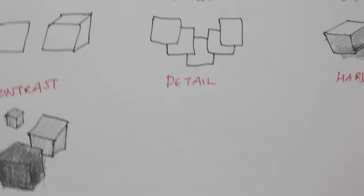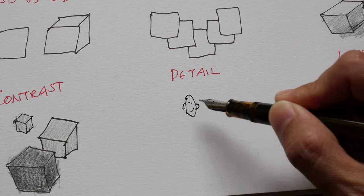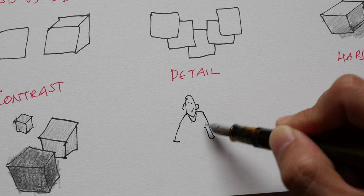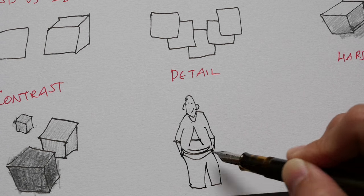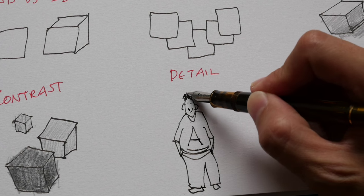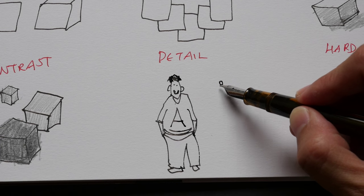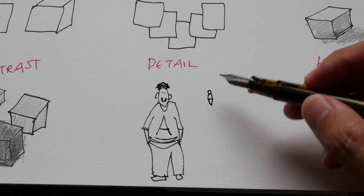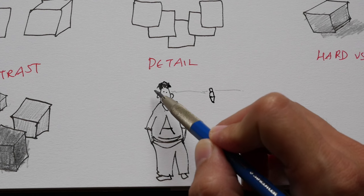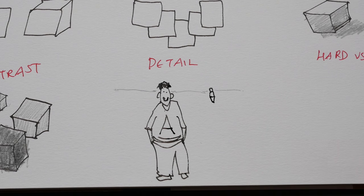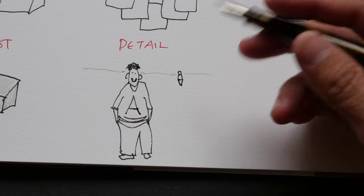The next technique is detail. You can draw objects that are closer with more detail. For example, I've drawn a figure here with a big smile — that's a big person nearby. The same figure standing much further away gets no detail because it's so far and small. For closer objects, you add things like smaller, thinner lines to indicate detail. So closer objects get more detail while distant ones remain simple.